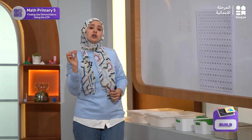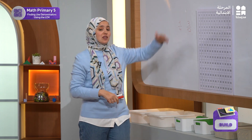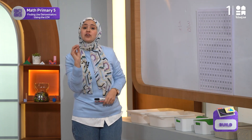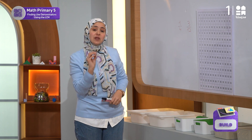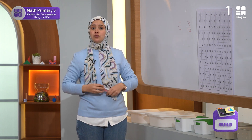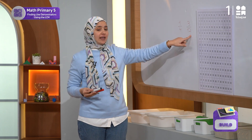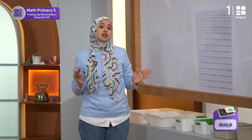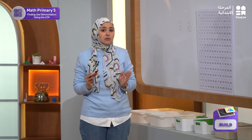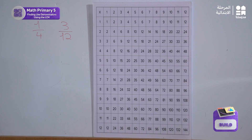Now, we want to find a common denominator for the two fractions using the multiplication chart. The first step is to look at the multiples of the denominator of the two fractions, which are 4 and 12, and to determine the common multiples of these two numbers in the chart.